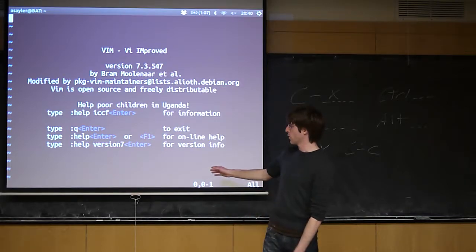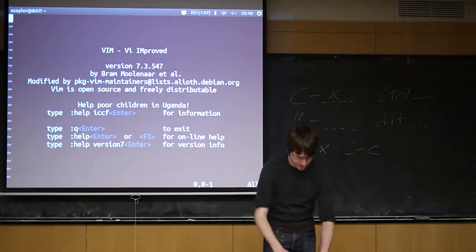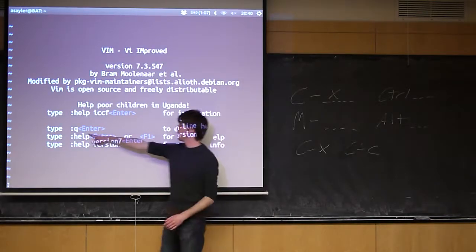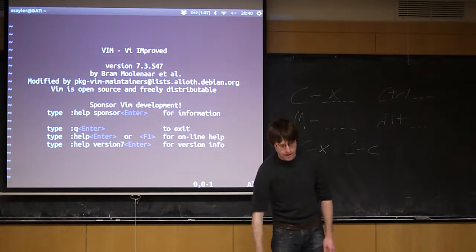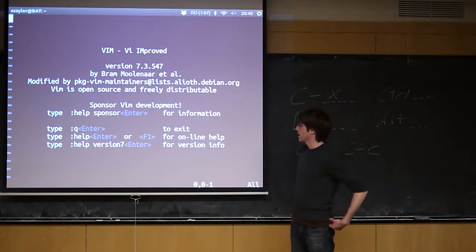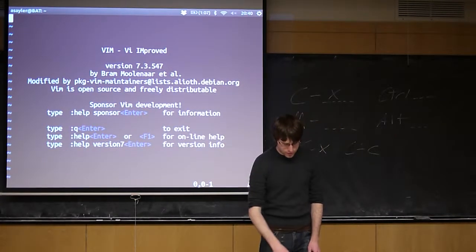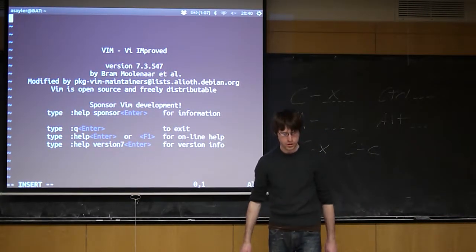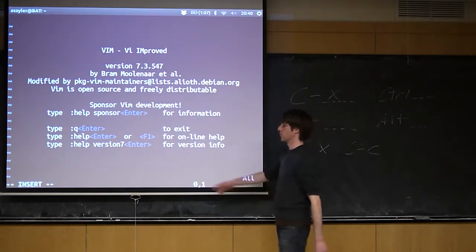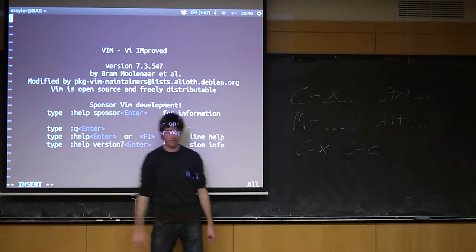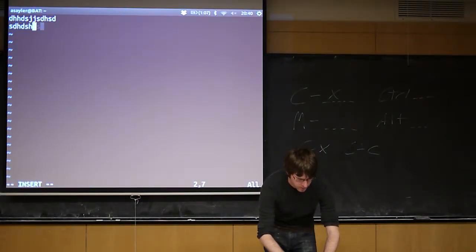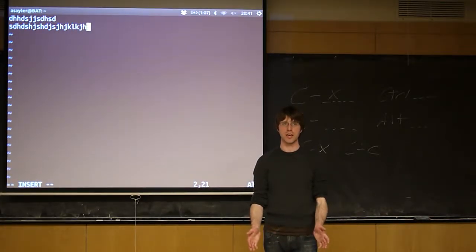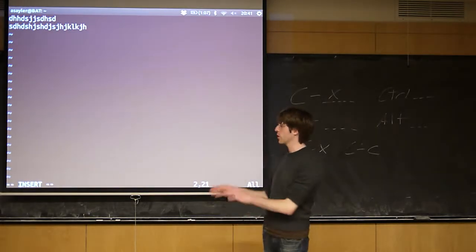This has screwed me up so many times. You open Vim, you start typing, and all of a sudden you're like 17 rooms deep, and you don't know where you are. To exit Vim, which is all anyone should ever be doing in Vim, is you type in, like it says here, colon, followed by Q. And that will exit out of Vim.